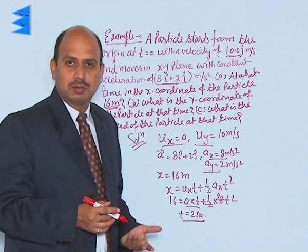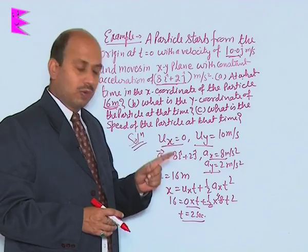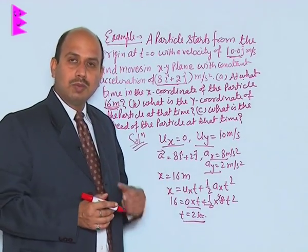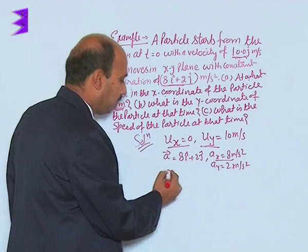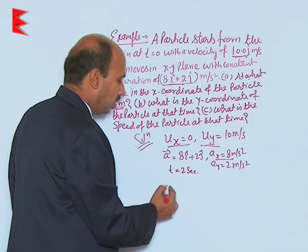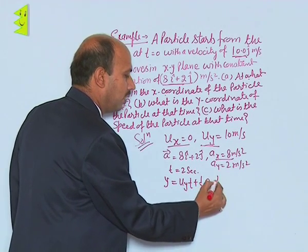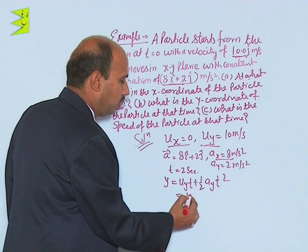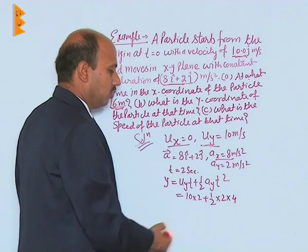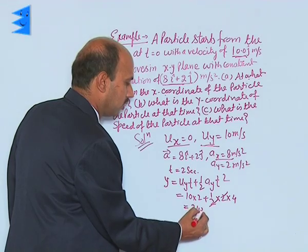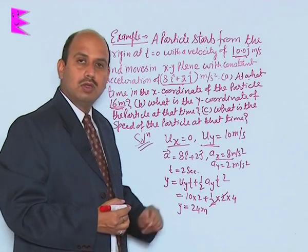Now for the next part: what is the y-coordinate at t = 2 seconds? We apply y = u_y·t + ½·A_y·t². Substituting: y = 10×2 + ½×2×(2²) = 20 + 4 = 24 meters. So the y-coordinate of the particle at t = 2 seconds is 24 meters.